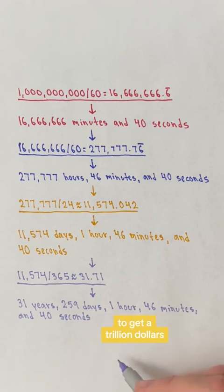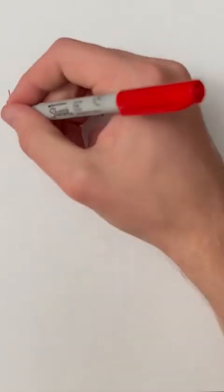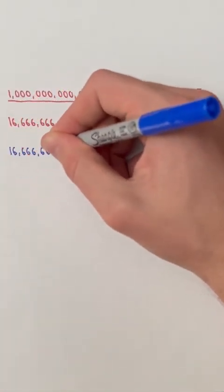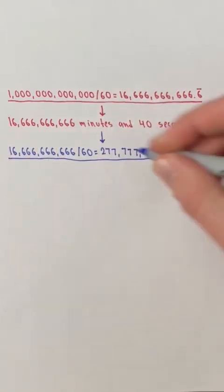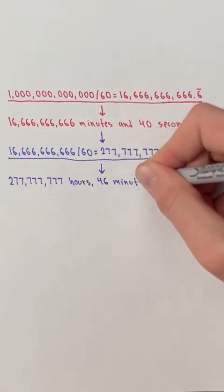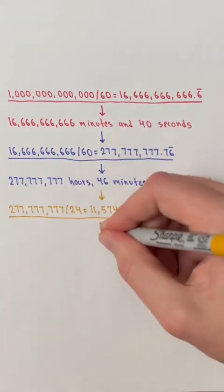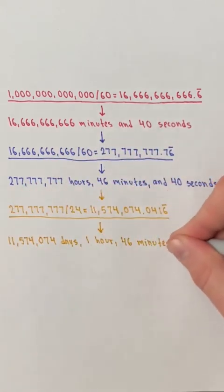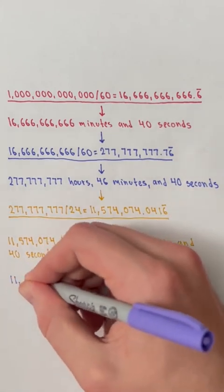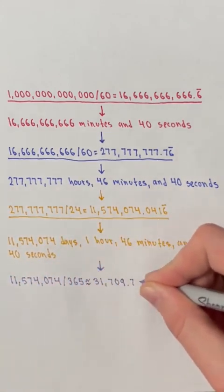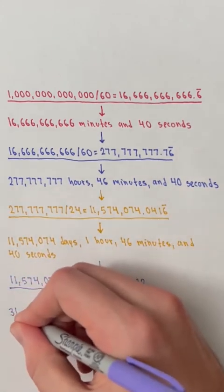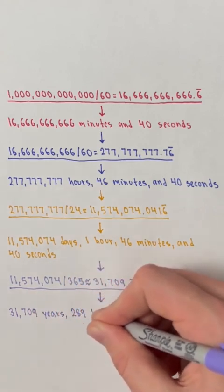Now, let's see how long it would take to get a trillion dollars if you make a dollar per second. We'll divide 1 trillion by 60, divide 16,666,666,666 by 60, divide 277,777,777 by 24, and 11,574,074 by 365 to give 31,709 years.